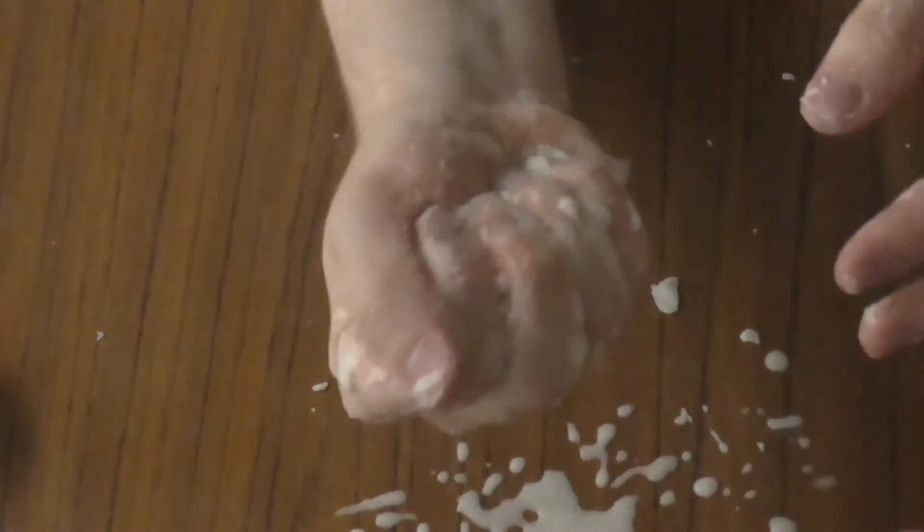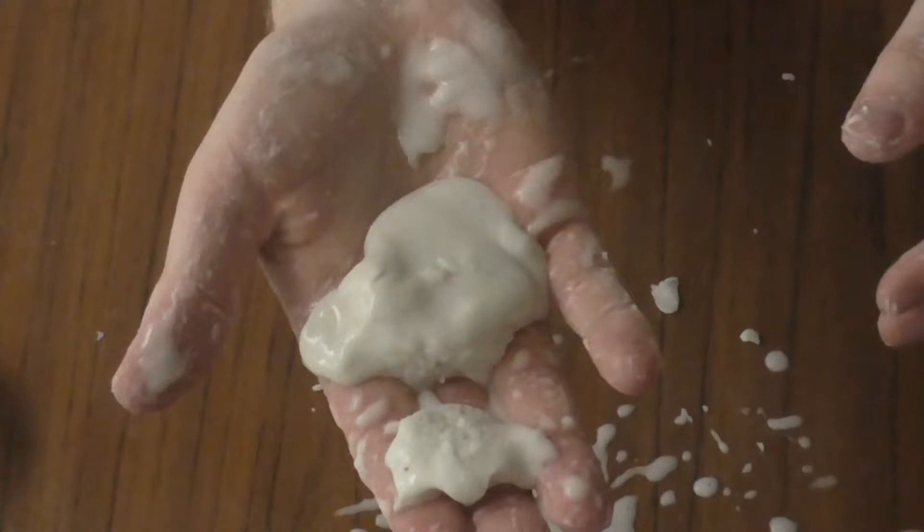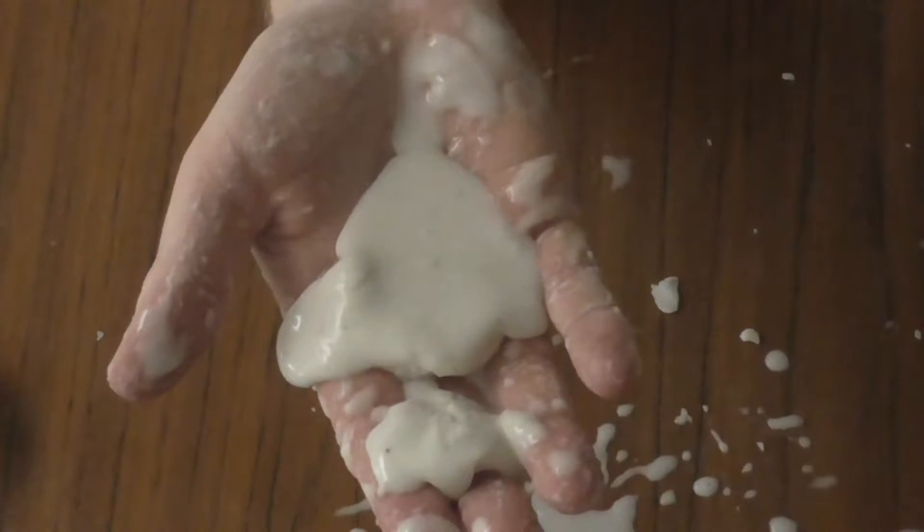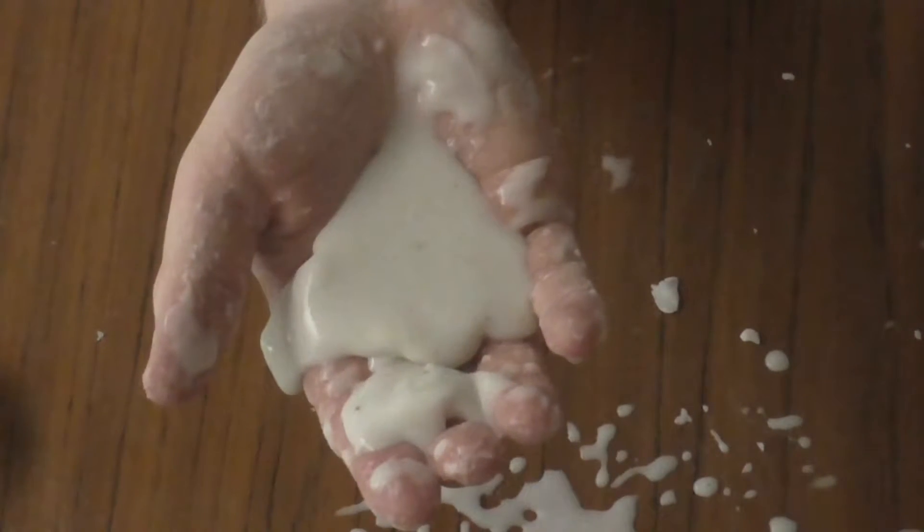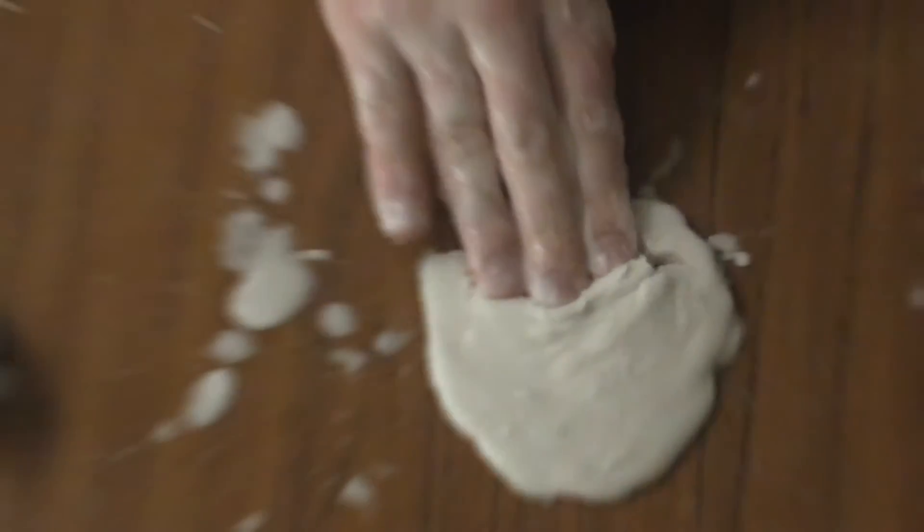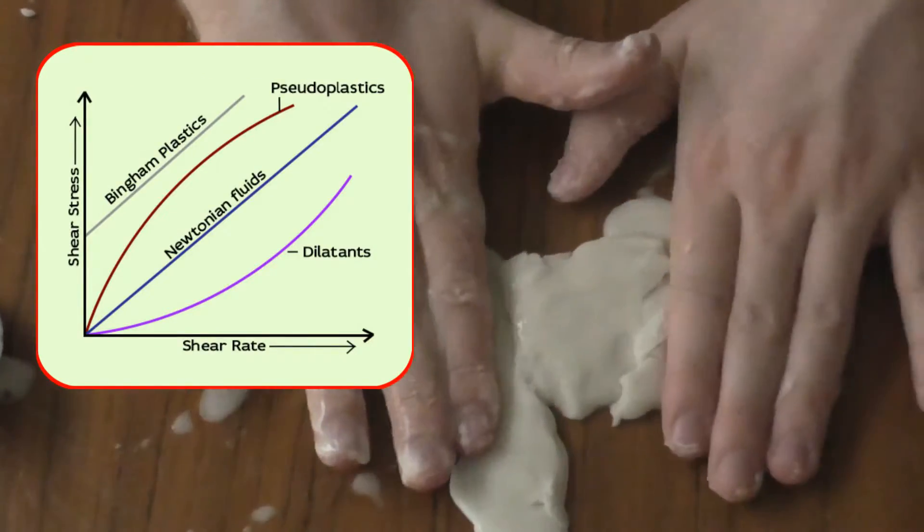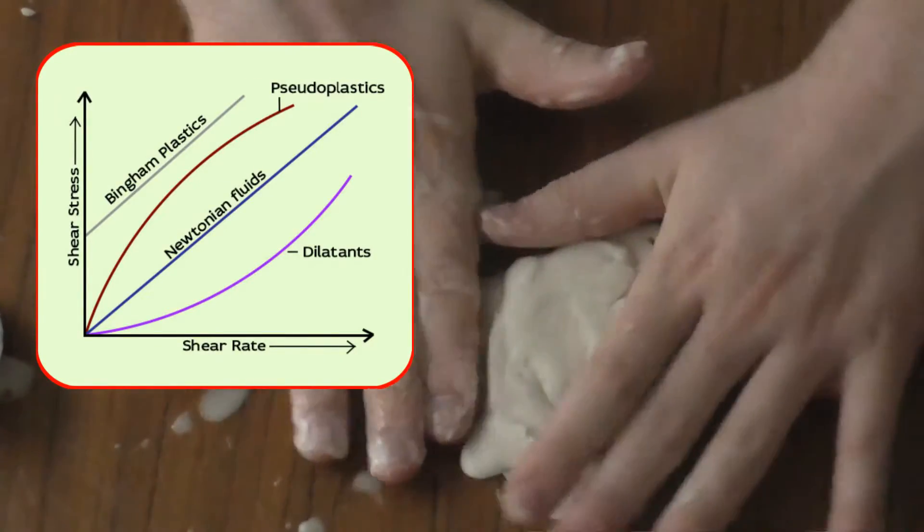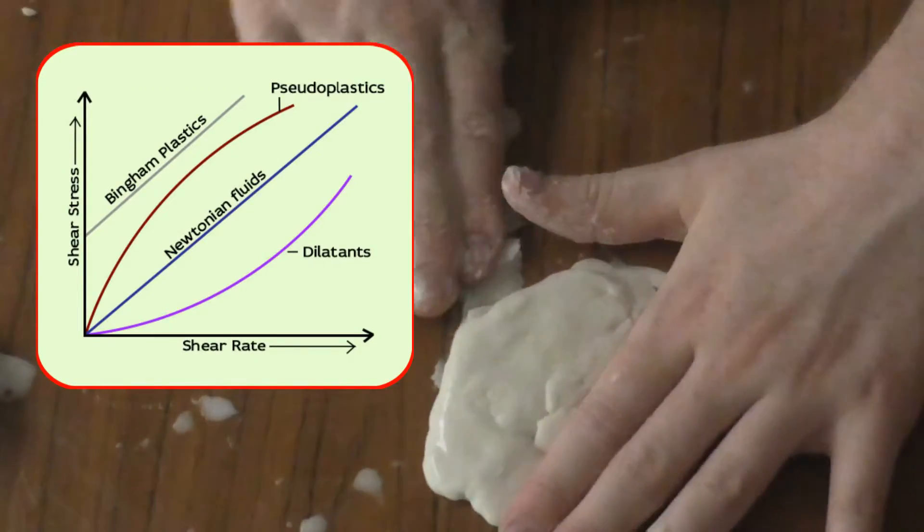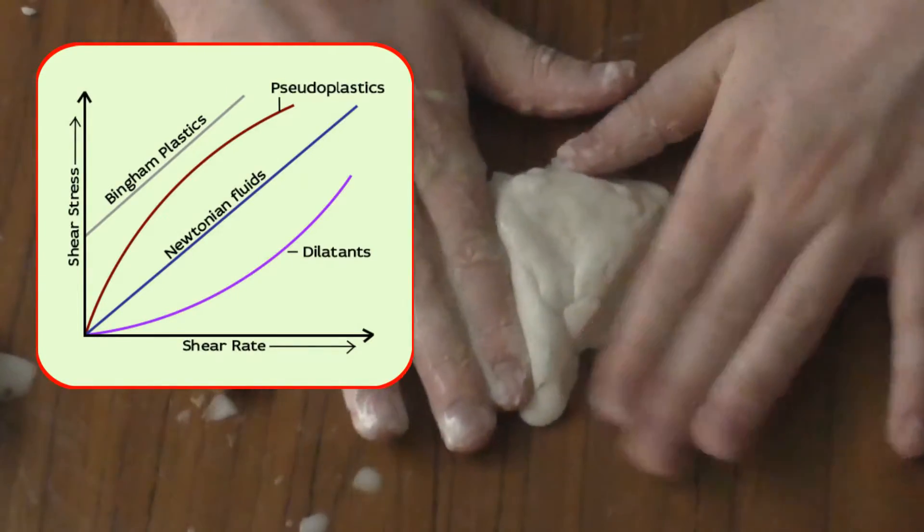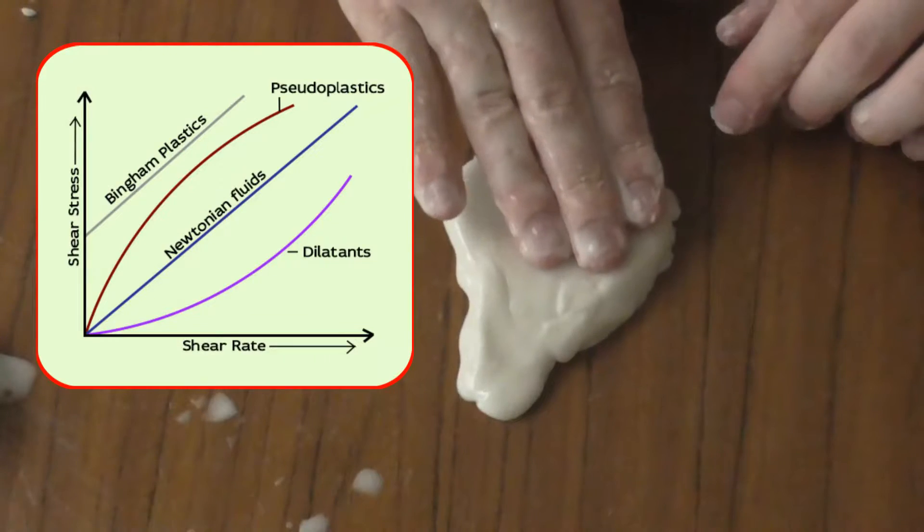And this is a special kind of substance also called the non-Newtonian dilatant fluid. In this graph you can see that the dilatant fluids are really behaving strangely and totally different than the normal Newtonian fluids and the pseudo-plastic fluids.